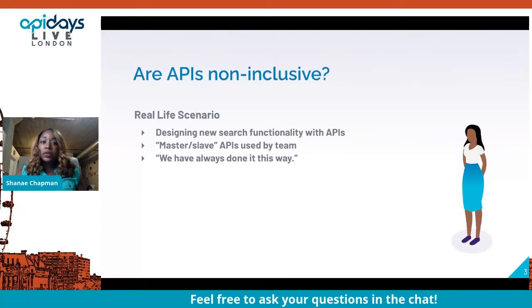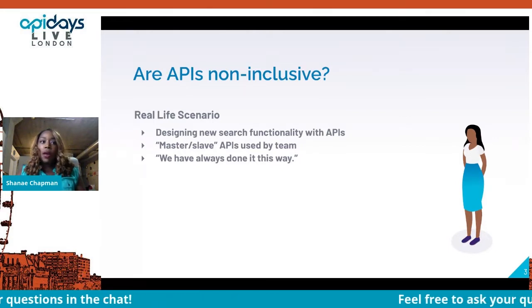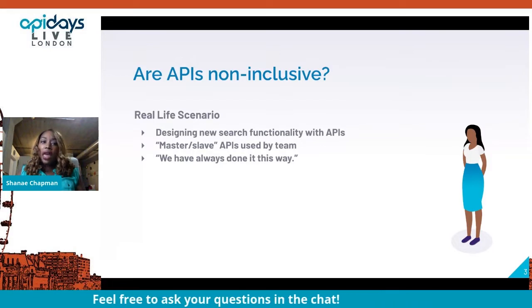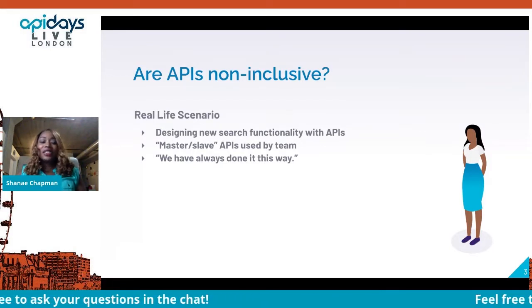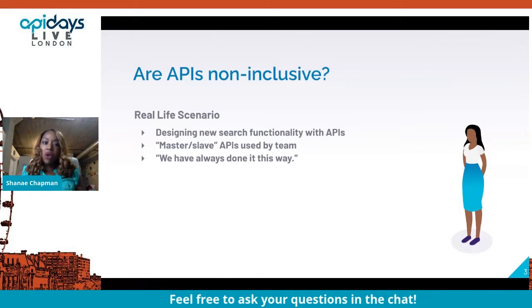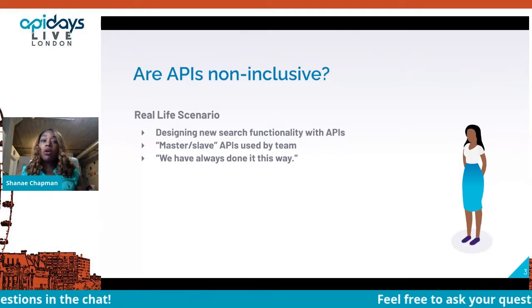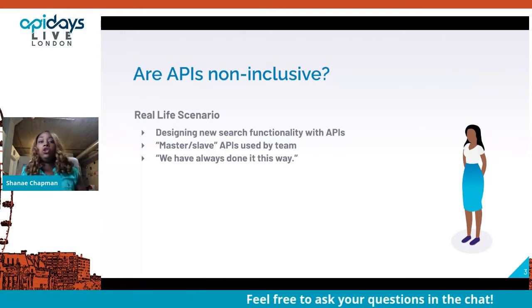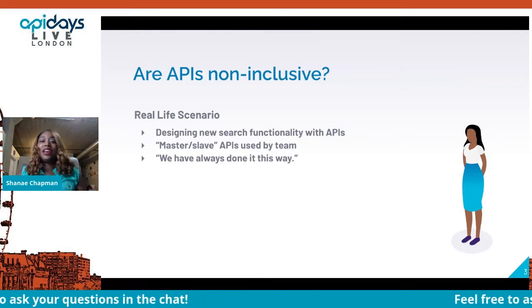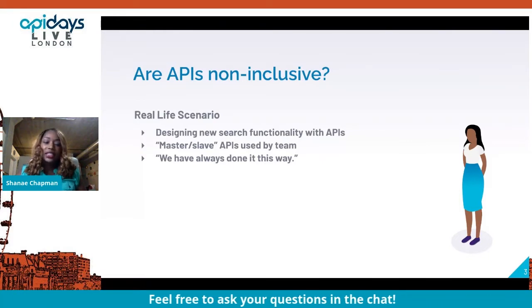We had weekly retros with this particular group, and I brought it up. I was in a safe space with people who made time for me to share and listen. I said this really bothers me, and immediately a group of white American guys with European ancestors empathized with me. They said, "I don't want you to feel that way — you are part of this team, and if this bothers you it will probably bother other people too. We can find other terms." But there was one person who said, "We have always done it this way."